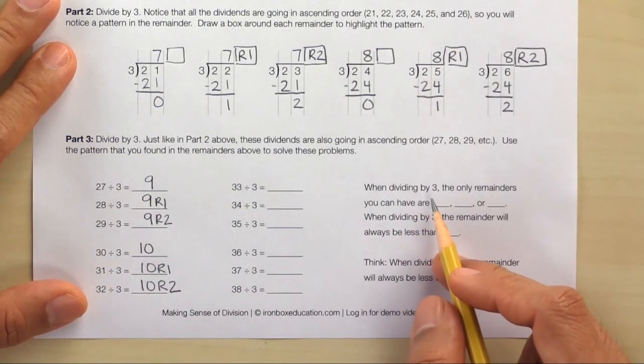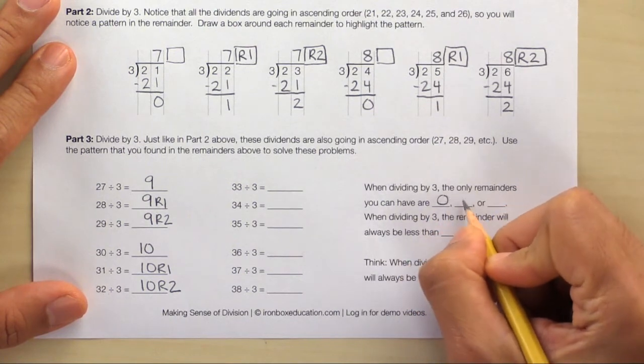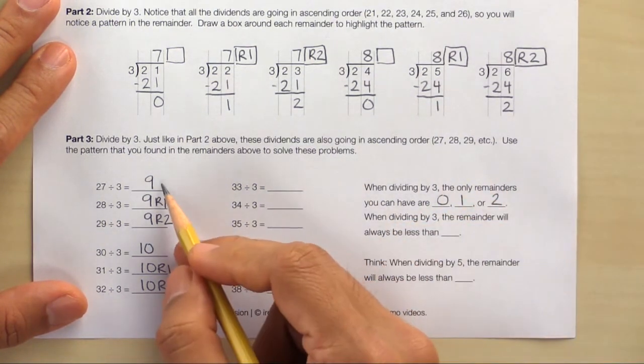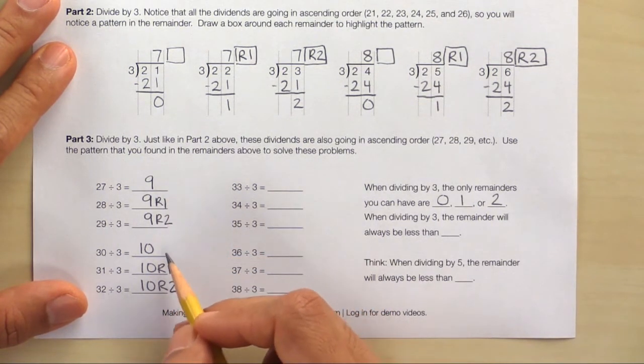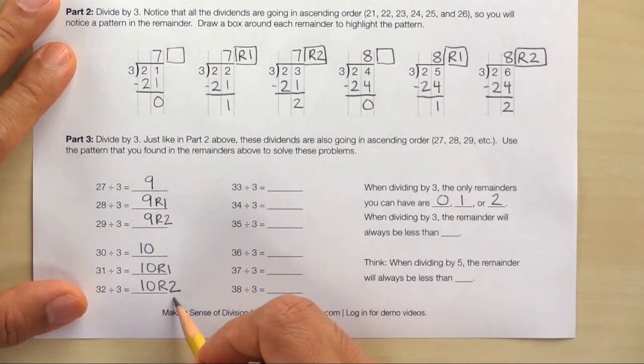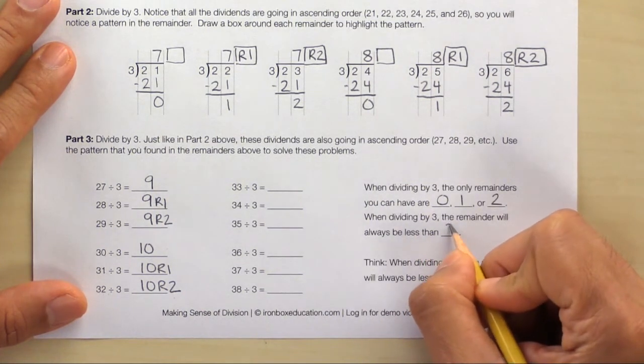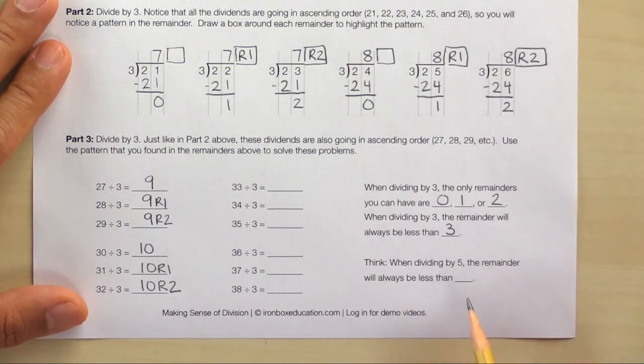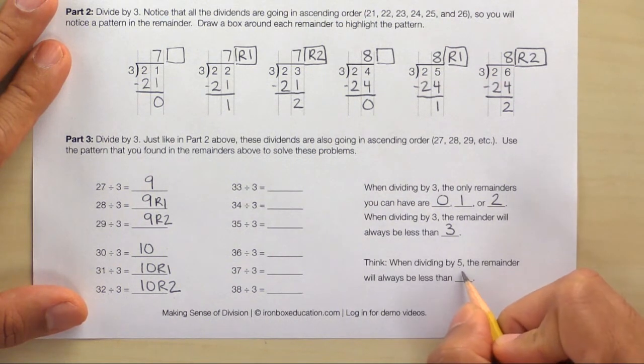Take a look at the statements on the right side of the page. When dividing by 3, the only remainders you can have are 0, 1, or 2. And we saw that here. No remainder, remainder 1, remainder 2. No remainder, remainder 1, remainder 2. Let's keep going. When dividing by 3, the remainder will always be less than 3. Last statement. Think. When dividing by 5, the remainder will always be less than 5.